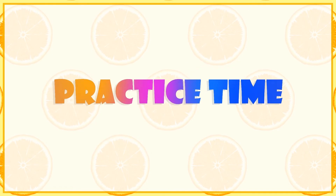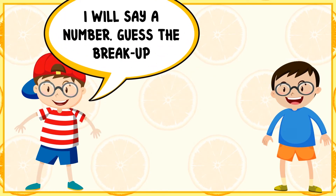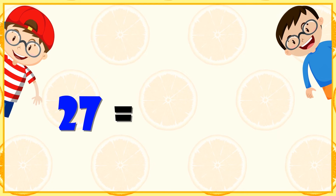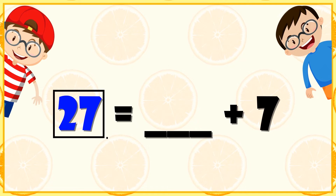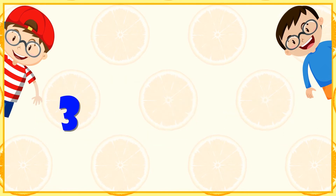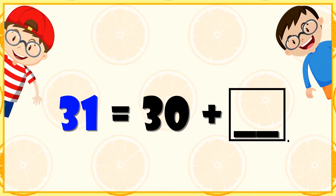Practice time! I will say a number, guess the breakup. 27 is equal to dash plus 7 — so what will make 27? 20 plus 7. 31 is equal to 30 plus dash — what will come here? 1. 30 plus 1 will make 31.